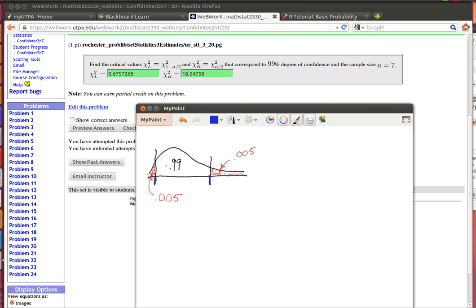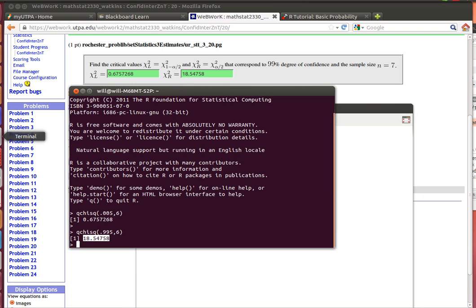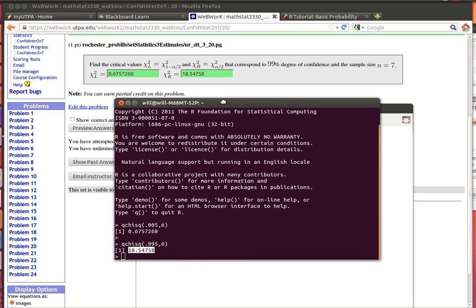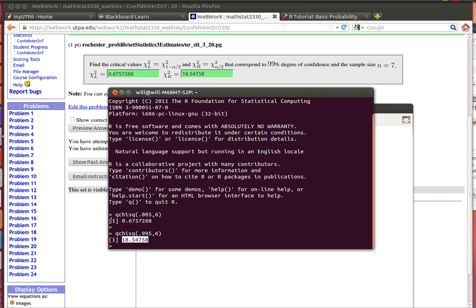So what's left over there is 1% and we divide that in 2. That's the alpha divided by 2. So there's the 0.005 up here and 0.005 down here. Now the nice thing is that R has functions for the chi-squared just like it does for the normal and the T distributions.